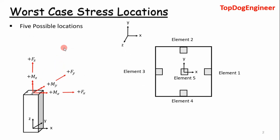The first thing you want to do when looking at a shaft or a tube is to determine the worst case stress locations. On a square shaft, your worst case stresses are going to occur at the outside of the mid-sections. This includes elements 1, 2, 3, and 4. You are going to have your worst case bending stresses acting there, and your worst case shear stresses acting in the middle. So there are 5 elements we are evaluating stresses at.